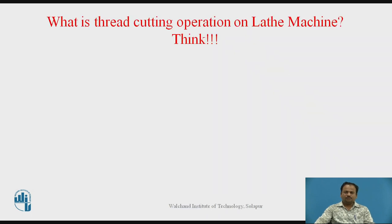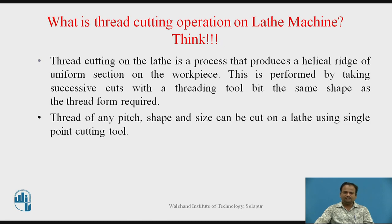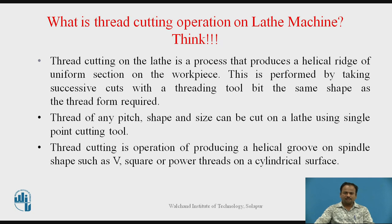Now I will ask a question: what is thread cutting operation on lathe machine? Thread cutting on lathe is a process that produces a helical ridge of uniform section on the workpiece. This is performed by taking successive cuts with a threading tool bit of the same shape as the thread form required. Thread of any pitch, shape, and size can be cut on the lathe using a single point cutting tool. Thread cutting is the operation of producing a helical groove — such as V, square, or power threads — on a cylindrical surface.